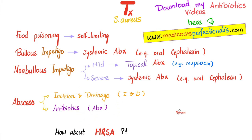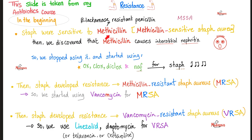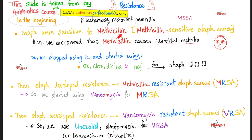For treating MRSA, here's the history: originally, Staph aureus was sensitive to methicillin — one of the penicillins. Methicillin was revolutionary because it was resistant to bacterial beta-lactamase. When Staph aureus secreted beta-lactamase to destroy beta-lactam antibiotics, methicillin resisted it. That's why Staph aureus was called Methicillin-Sensitive Staph aureus — meaning Staph aureus that can be killed by methicillin.